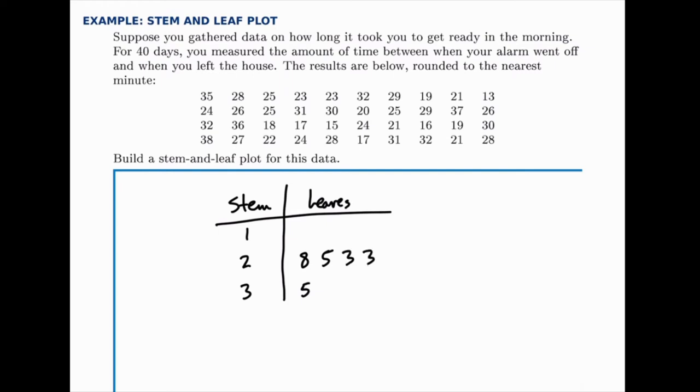We'll put another three. Then 32 means we'll put a two in the third column. Then 29, 19, 21, 13, and so on. And I won't go through and fill all these out in detail. I'll go through and show the final result in just a moment.